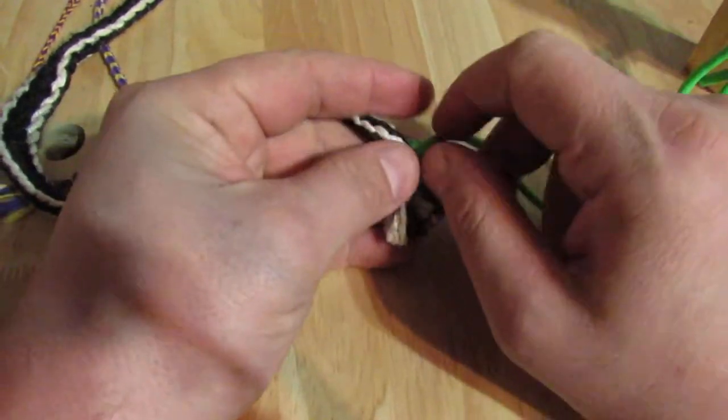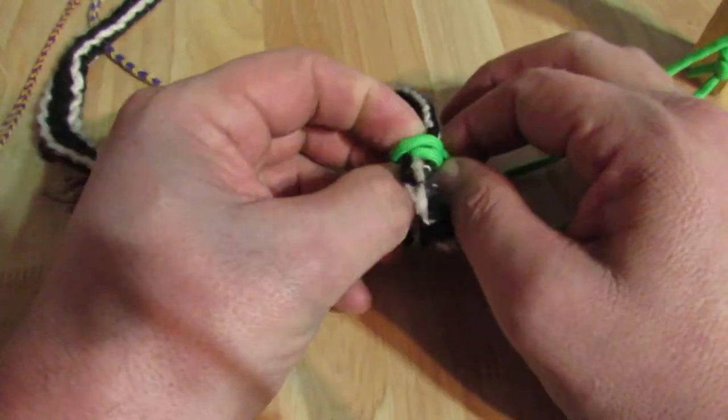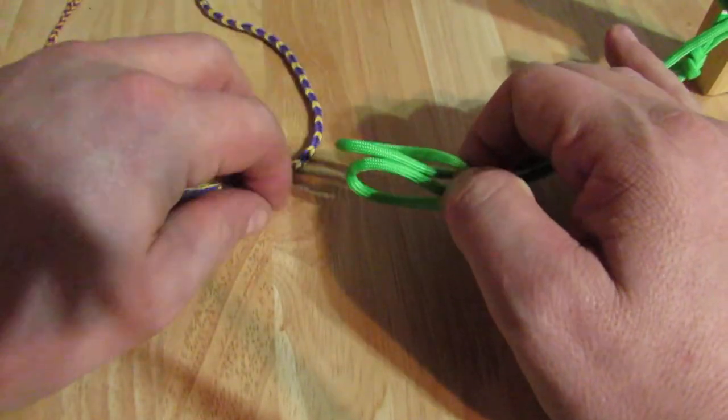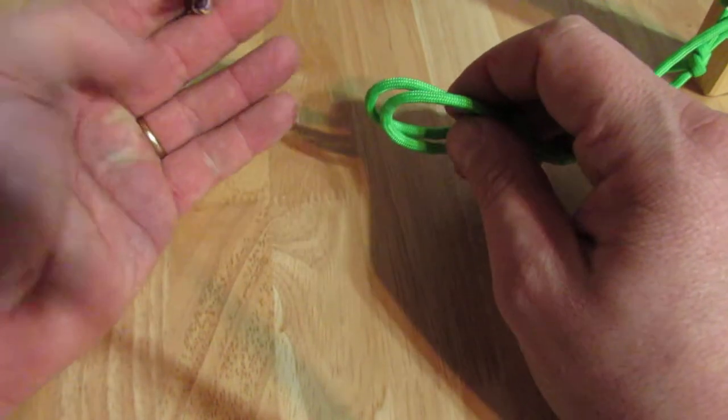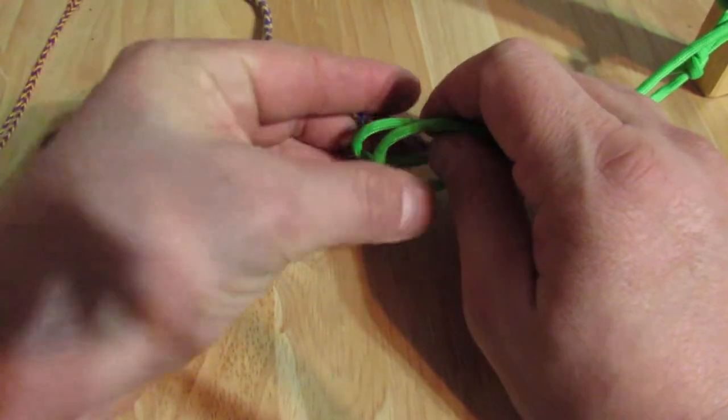Now I'm using 550 cord here just to make it easier to see. You can do this with any size string as long as it'll hold up to the tension that you're putting on it. Just to also show you that if you've got some good boot lace or some 550 cord, you can use this on any size thread that you're using for your braid.